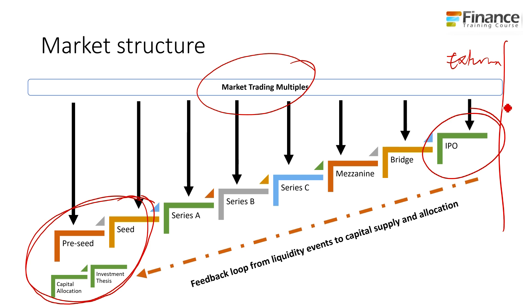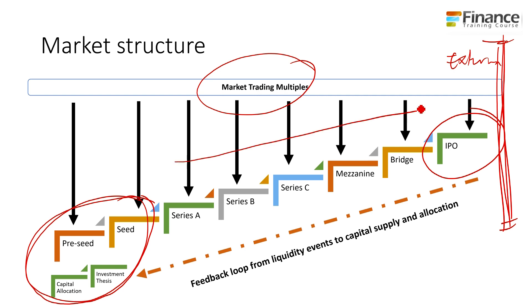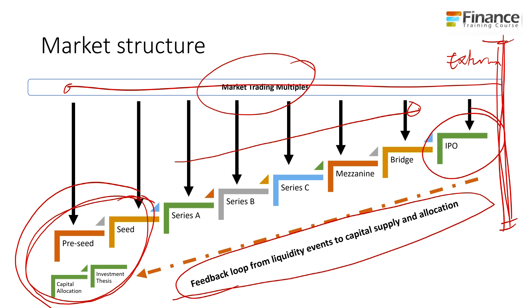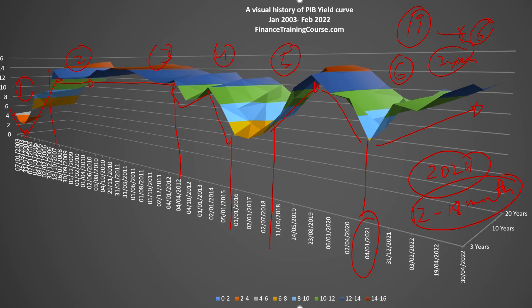So if the exit market dies or the gate is closed, there is back pressure because all transactions flow in one direction but the door is closed. That back pressure comes all the way down and directly impacts how investors view your business. There's a feedback loop from liquidity events to capital supply and allocation. Right now, we suspect you're about 18 months away before that door opens, so you have to plan accordingly.